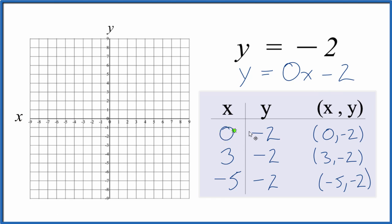So we have x is 0, y is negative 2. x is 3, y is negative 2. You can see all these points are going to be on this horizontal line here. x is negative 5, y is negative 2.